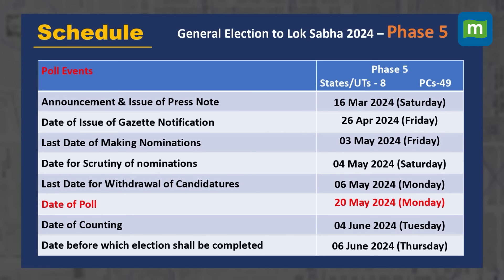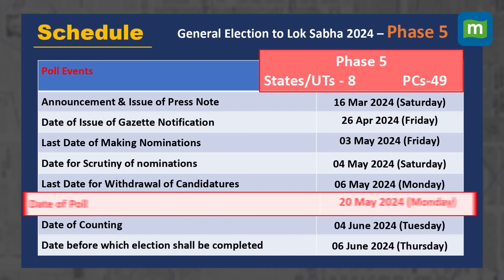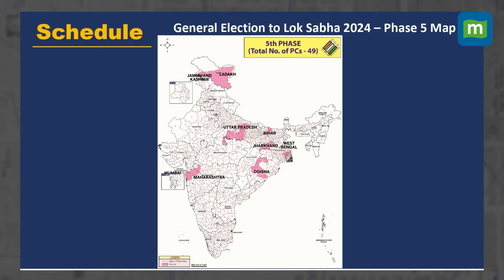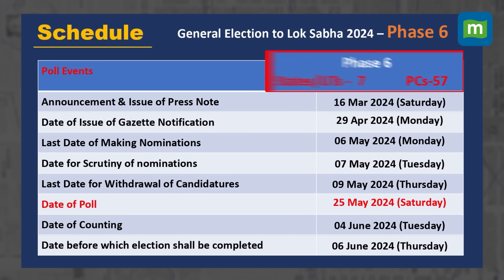Phase 5 will be conducted on 20th May 2024, in which 49 constituencies of 8 states and union territories will go to polls. Constituencies of Ladakh, Jammu and Kashmir, Uttar Pradesh, Maharashtra including Mumbai, Odisha, Bihar, Jharkhand and West Bengal will go to polls.